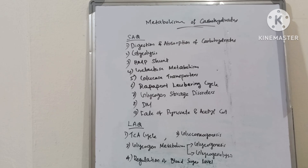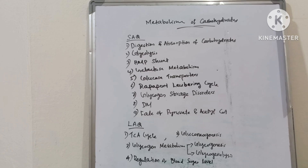Metabolism of carbohydrates, short answer questions: digestion and absorption of carbohydrates, glycolysis, HMP shunt, galactose metabolism, glucose transporters, Rapoport-Luebering cycle, glycogen storage disorders, diabetes mellitus, phosphoenolpyruvate and acetyl-CoA.